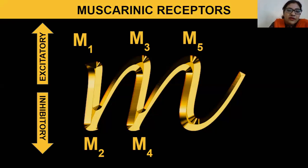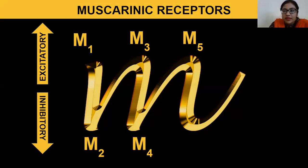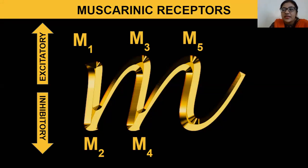Looking at the letter M, M1, M3, and M5 are on the upper side, while M2 and M4 are on the lower edge. This helps us remember that M1, M3, and M5 are excitatory in action, while M2 and M4 are inhibitory in action.